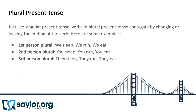Plural present tense. Just like singular present tense, plural present tense verbs conjugate by changing or leaving the ending of the verb. Here are some examples. First person plural: we sleep, we run, we eat. Second person plural: you sleep, you run, you eat. Third person plural: they sleep, they run, they eat.